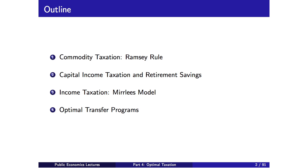I'm going to talk about the next section of the class: optimal taxation. We're going to talk about four sets of things. We'll first start by talking about commodity taxation and the classic Ramsey rule, one of the most important results in optimal tax theory. Then we'll talk about capital income taxation and the retirement savings literature. We'll then talk about income taxes and the Mirrlees model, focusing on implementing it empirically, drawing on the work of Emmanuel Saez and others. And then we'll talk about optimal transfer programs like the optimal design of the EITC and in-kind transfers to low-income people.